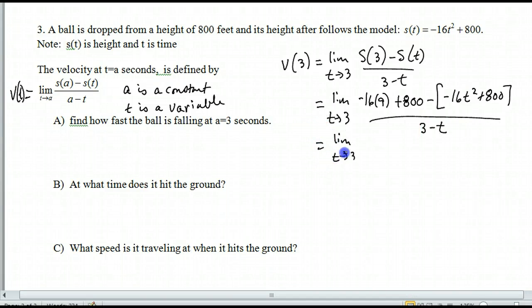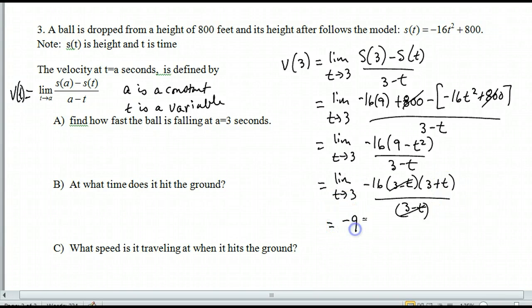So, I go the limit as t approaches 3. If you look here, this 800 will cancel with this 800 because I have a minus sign here. And then, here's a negative 16 that's in common. I'm going to factor that out. And so, I get a 9. And then, the negative 16 I took out. So, I still have a negative. So, it's minus t squared all over 3 minus t. Limit as t goes to 3 of negative 16. This would be 3 minus t, 3 plus t all over 3 minus t. This and this will cancel. And now, I can do a direct substitution.